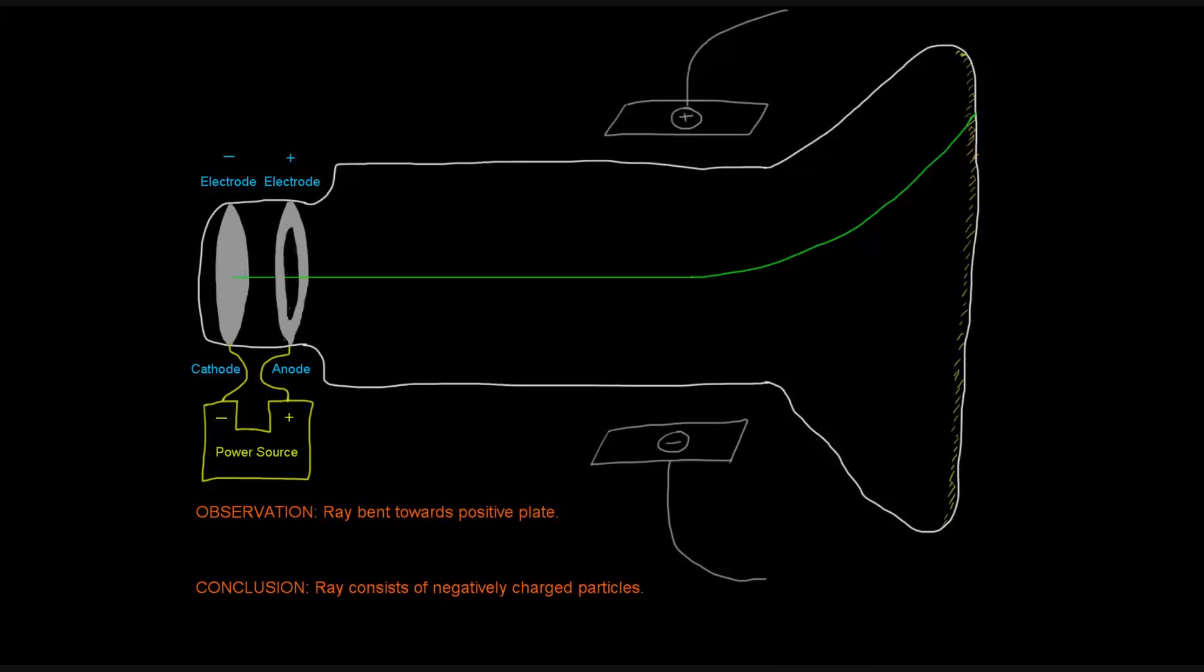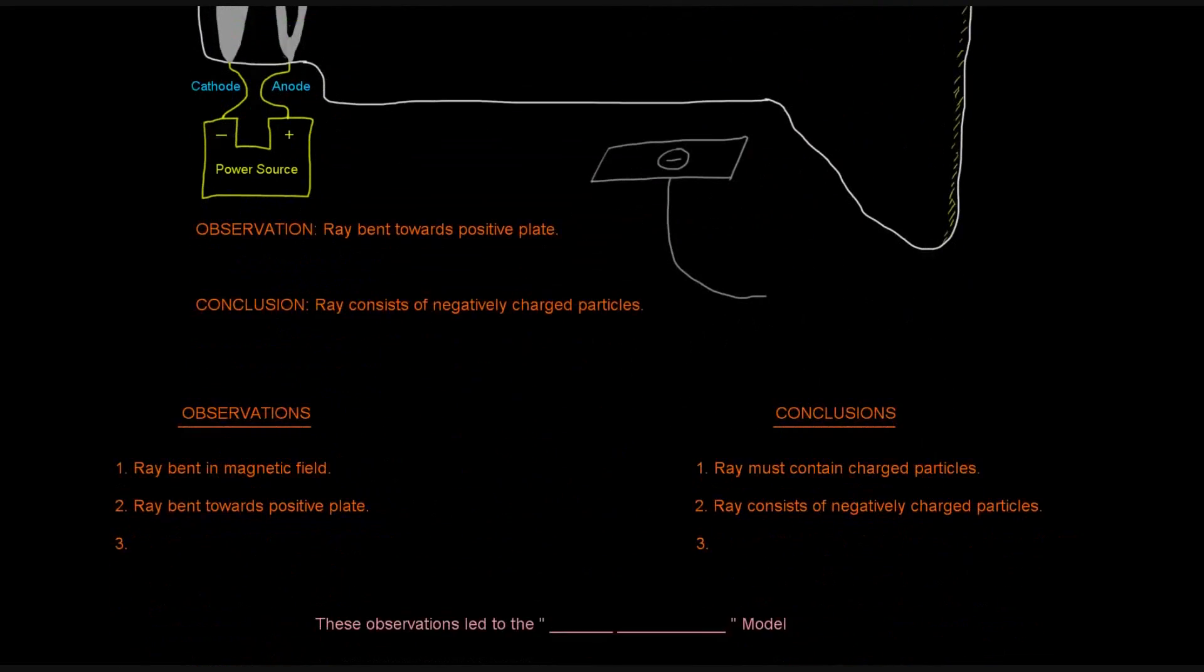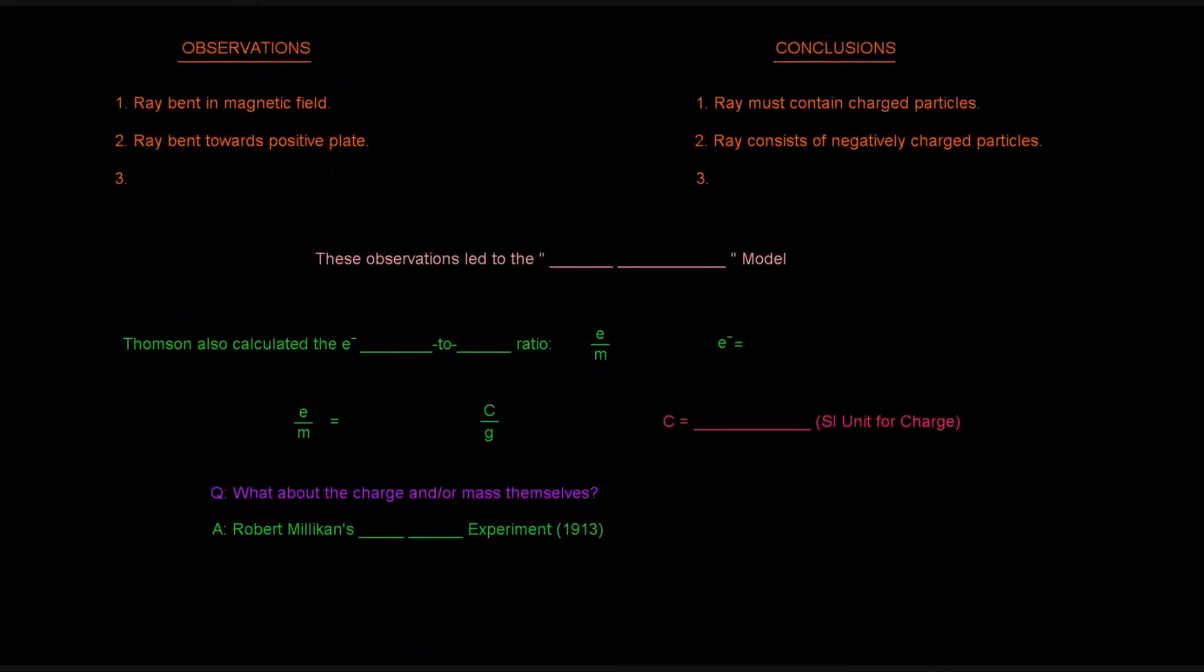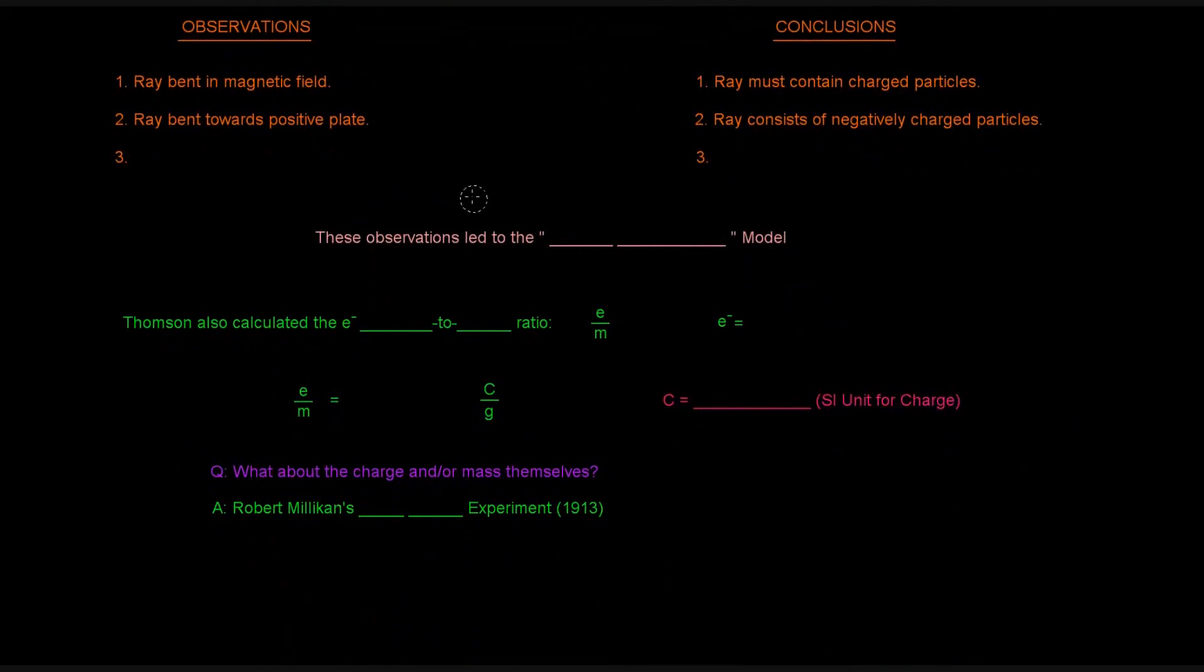Okay, so then what? So there were a few different observations that he made, a few different conclusions that he drew from them. So we already said that the ray bent in a magnetic field, so that led him to conclude that the ray must contain charged particles, right? So there was something charged in the beam. And then he noticed that the ray bent towards the positive plate, which meant that it must have negatively charged particles specifically.